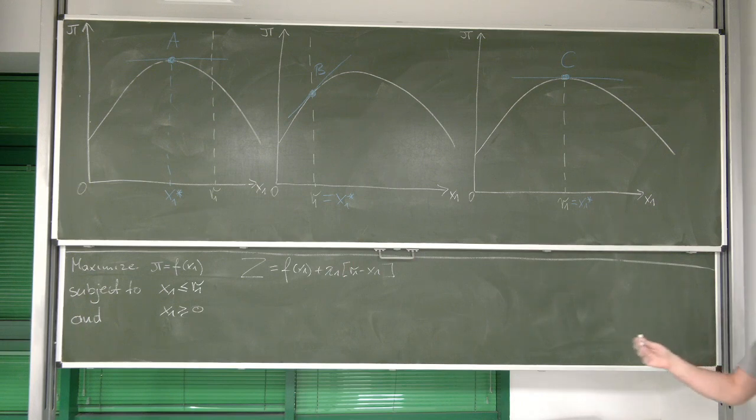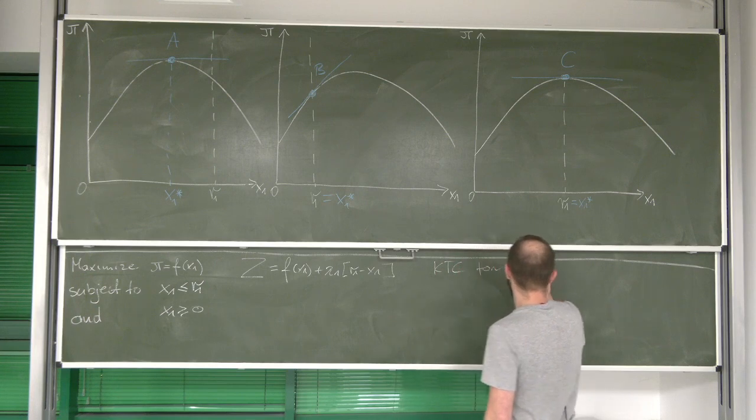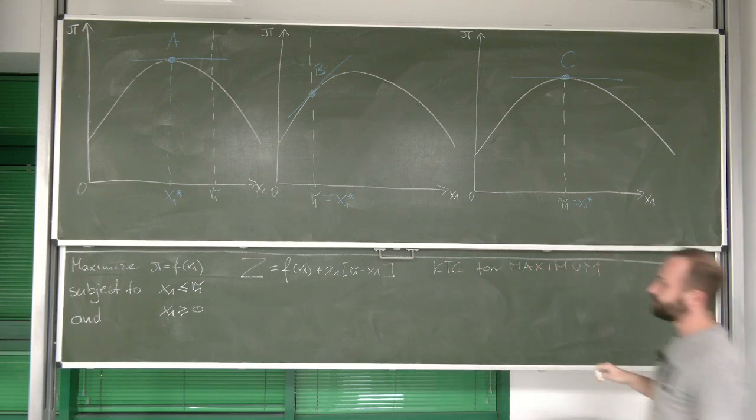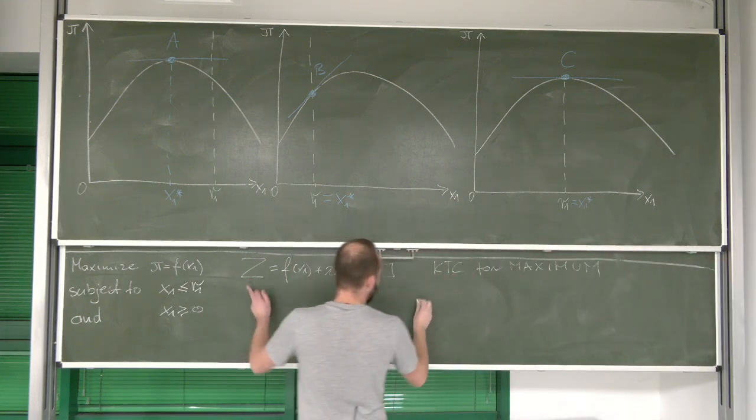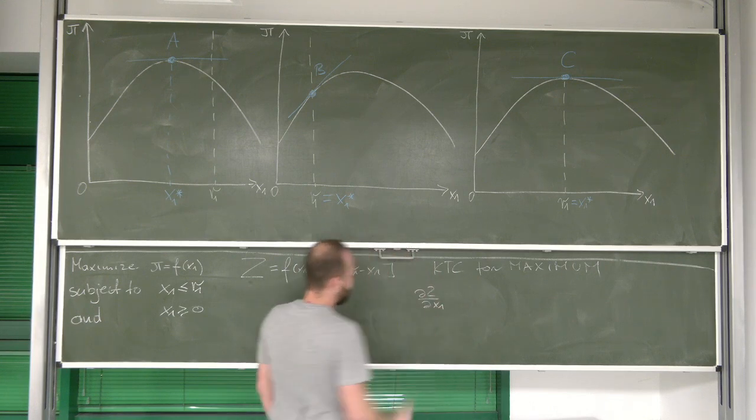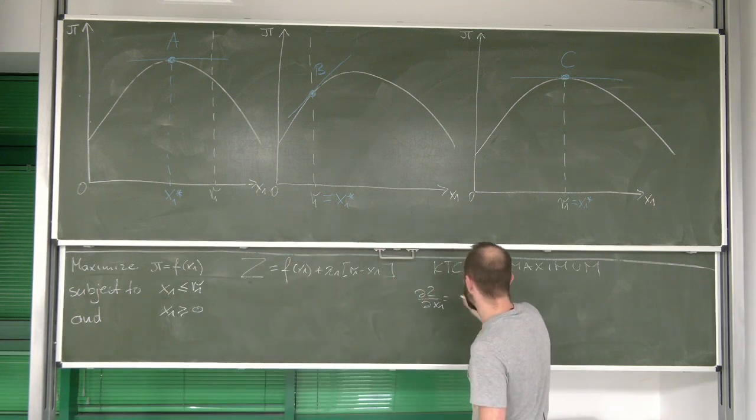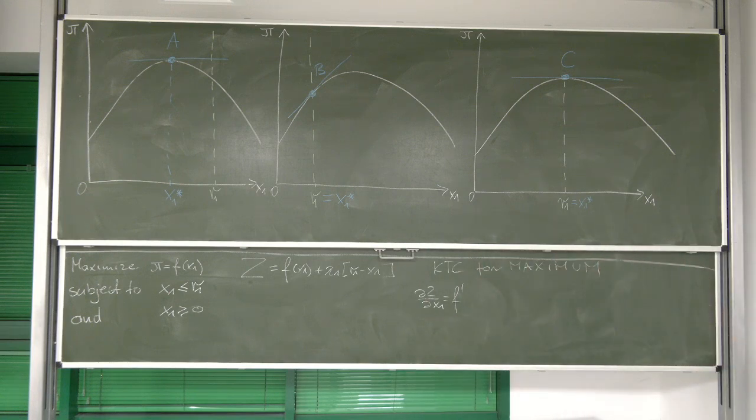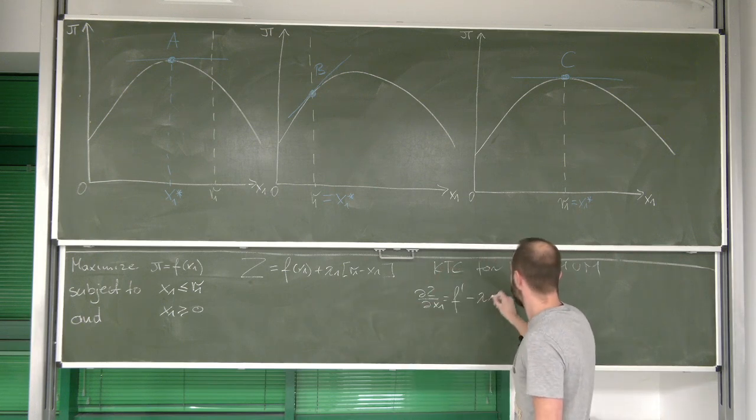Now let's state Kuhn-Tucker conditions for maxi. So first thing, we need to differentiate z with respect to x1, which is simply, which I'm going to simply write as f prime, it's just a function of one variable, and minus lambda.